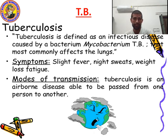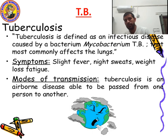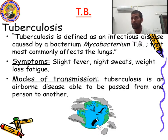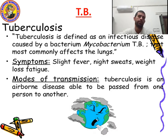Now, mode of transmission: how does tuberculosis transfer? Tuberculosis is an airborne disease — it can pass from one person to another. If you cough, it can transfer from one person to another person. When you cough, the droplets go into another healthy person's body and that person will also suffer from the same disease.